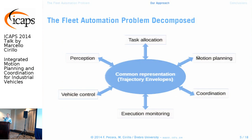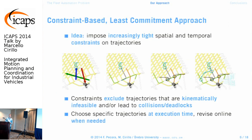Fleet coordination essentially boils down to coordinating trajectories — knowing where a vehicle will be at a specific time. We use a common representation called trajectory envelopes: groups of feasible and acceptable trajectories. We take a least commitment approach: at the beginning, all solutions are possible; task allocation excludes certain destinations; motion planning enforces kinematic constraints, removing kinematically infeasible trajectories; and coordination prunes temporal profiles that would lead to collisions.